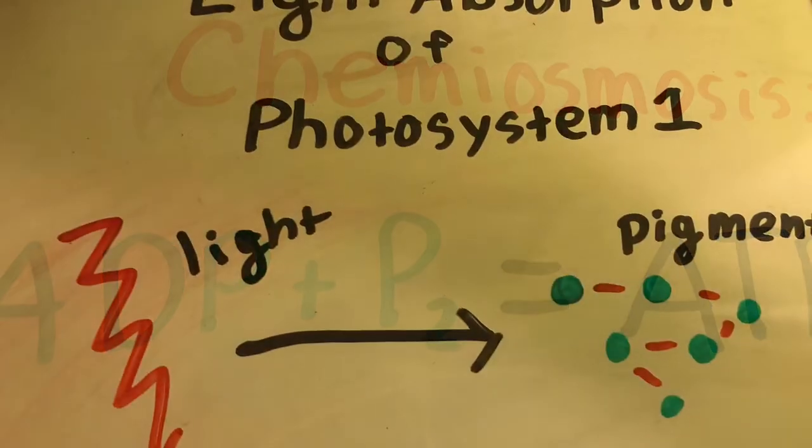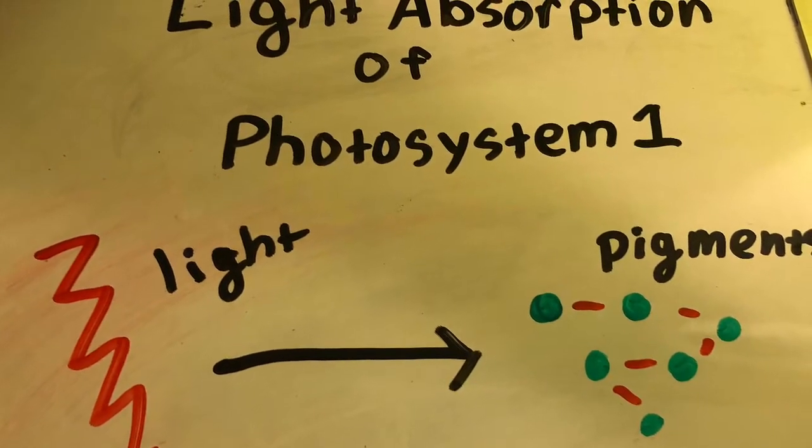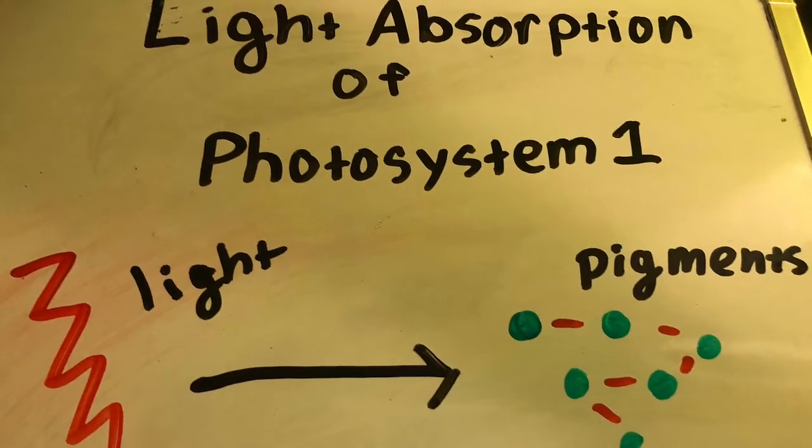The light absorption of photosystem I is very similar to photosystem II, though the electron arrives with very low energy.